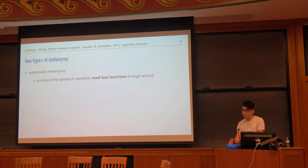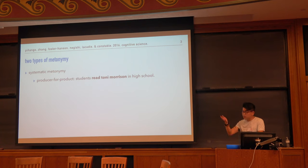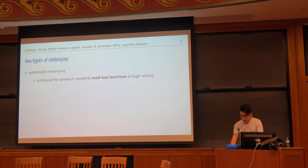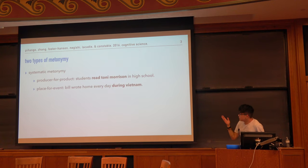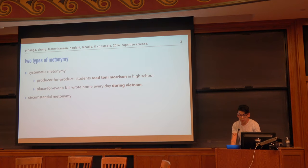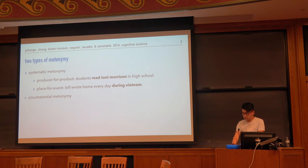The first one we called systematic metonymy, which comes in a variety of flavors. One is producer for products, so something like students read Toni Morrison in high school, where the use of Toni Morrison means her written works, not the person herself. We also have things like place for event: Bill wrote home every day during Vietnam.